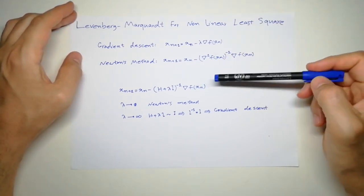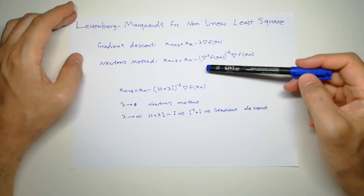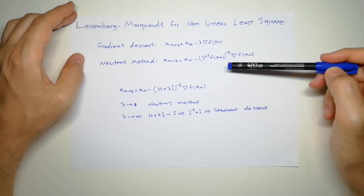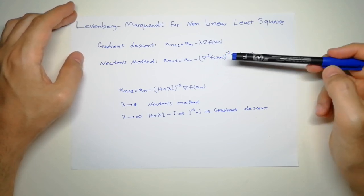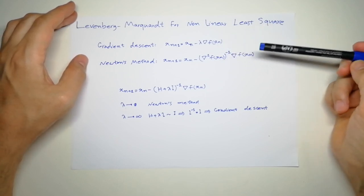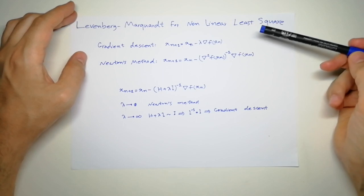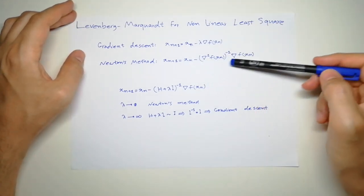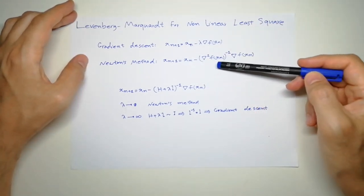But if you want to recap, it's approximating the function by a second order function, basically writing a Taylor series for second order, then setting it to zero and finding the root of that. That's how we get this.